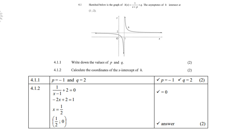For 4.1.1, the values of p and q: p is next to x + p, and that is normally the value of x but with the opposite sign. So x is x − 1, meaning p = −1. The horizontal asymptote goes through y = 2, and q is always the position of the horizontal asymptote, so q = 2.